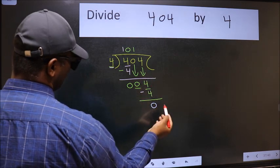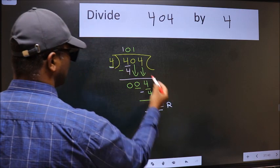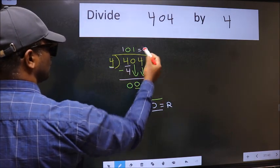No more numbers to bring it down. So we stop here. This is our remainder and this is our quotient.